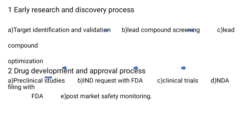The traditional approach has two methods. First, early research and discovery process. Second, drug development and approval process. In early research and drug discovery, the steps are: target identification and validation, lead compound screening, and lead compound optimization. The drug development and approval process includes preclinical studies, IND request with FDA, clinical trials, NDA filing with FDA, and post-market safety monitoring.